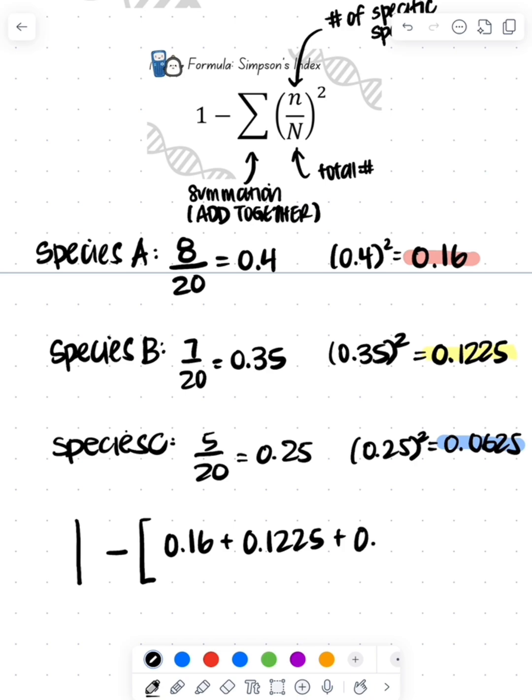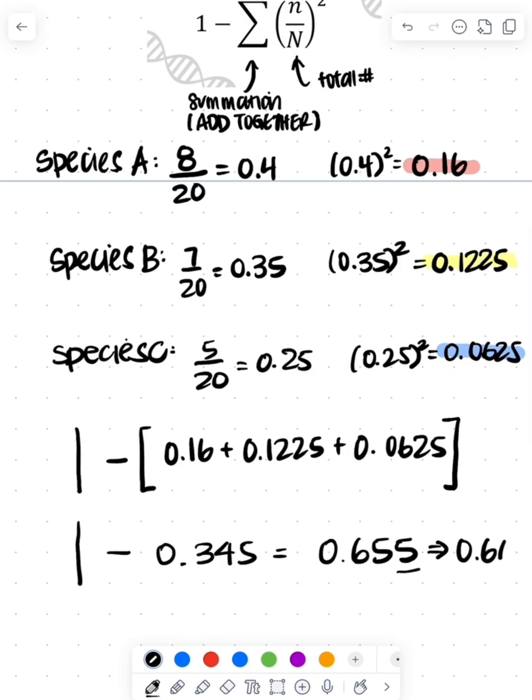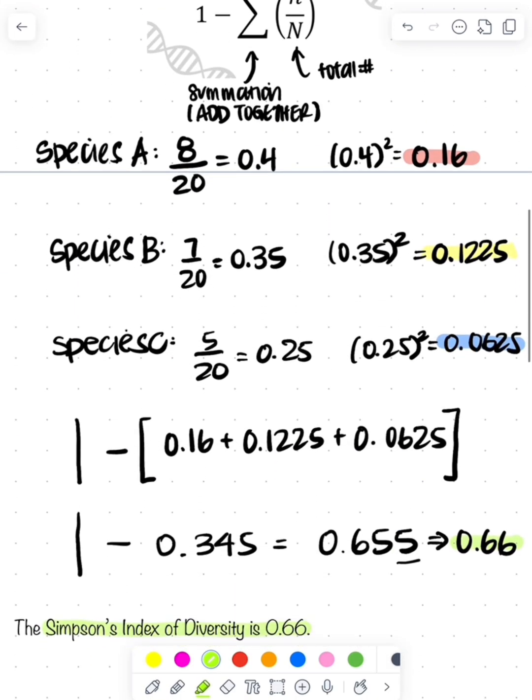So now we're supposed to do the summation, so I have to add them together. So 1 minus each of these numbers added together: 0.16 plus 0.1225 plus 0.0625. If we add those together, we're going to get 1 minus 0.345, and that will give me 0.655. Now it says to round to the 100th place, so that means that 5 is going to cause us to round up to 6. So Simpson's index is 0.66.